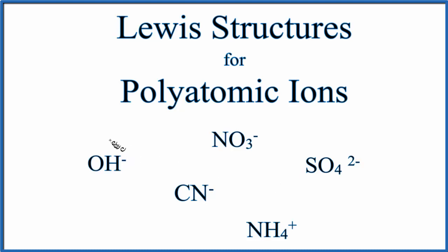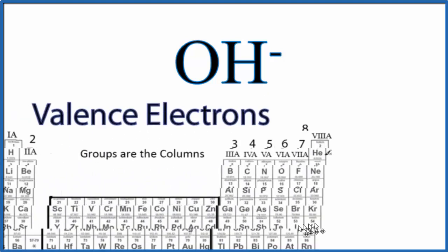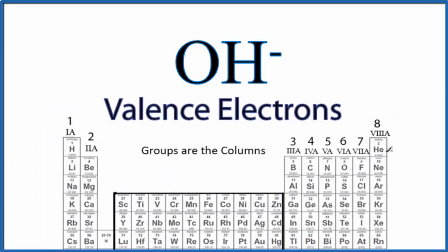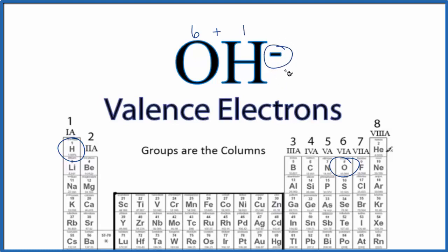Let's start with the hydroxide ion, OH⁻. The first thing we need to do is count the number of valence electrons. Oxygen is in group 6A, sometimes called 16, so it has 6 valence electrons. Hydrogen is in group 1A and has 1 valence electron. We also have the negative charge, which means there's one extra electron. So 6 + 1 + 1 = 8 total valence electrons for OH⁻.